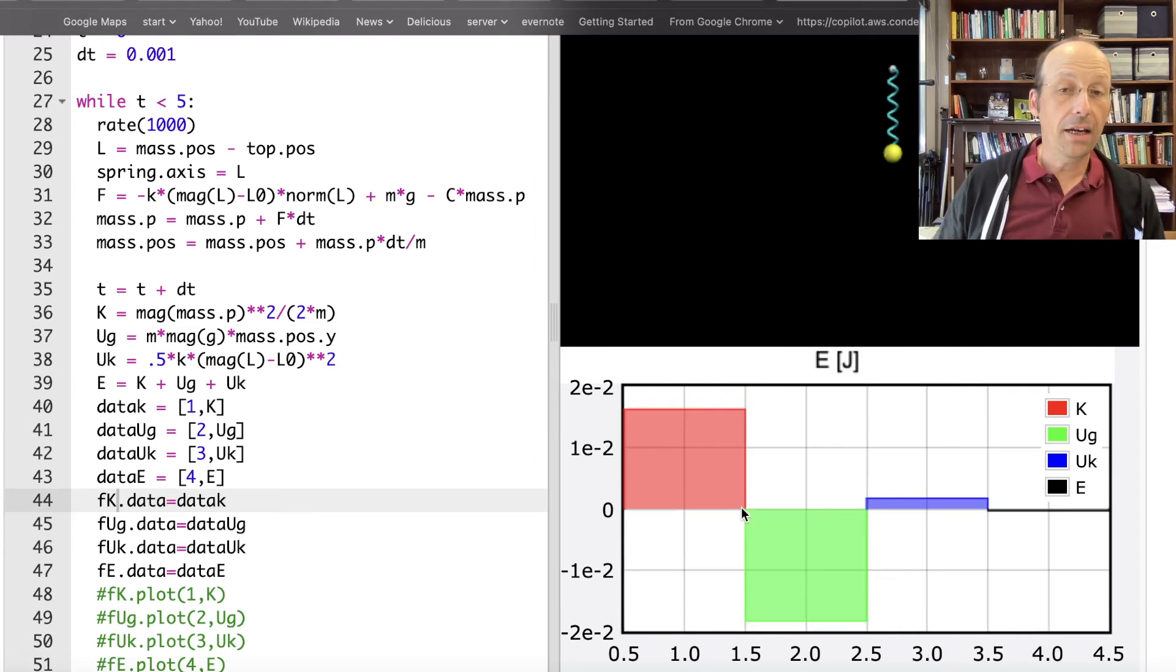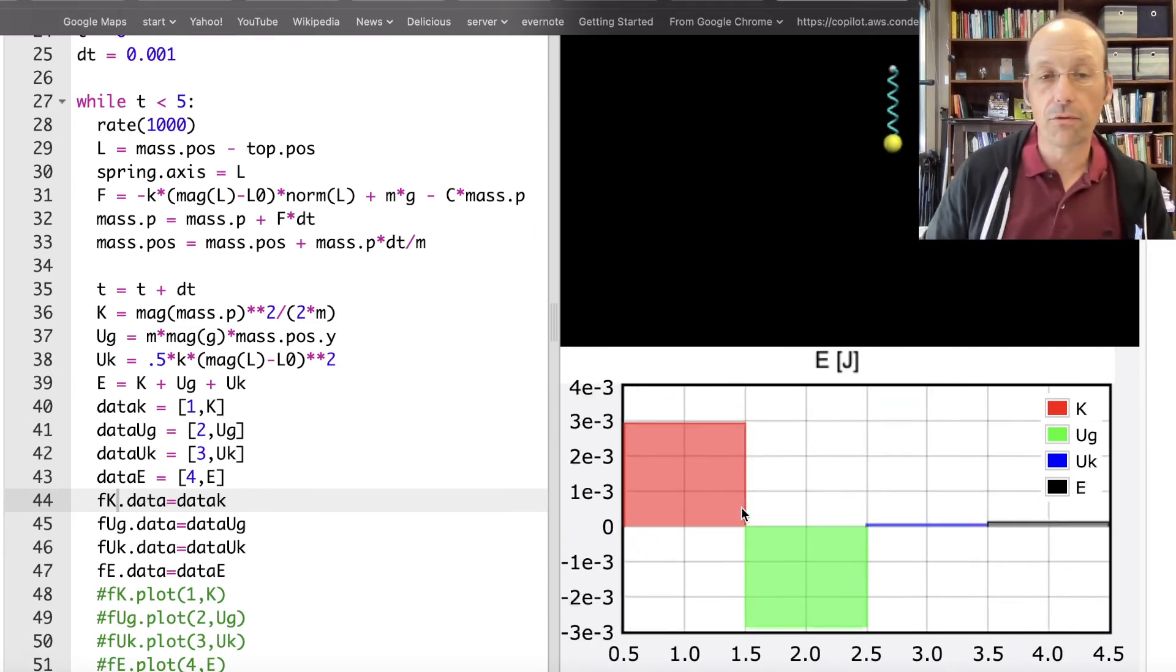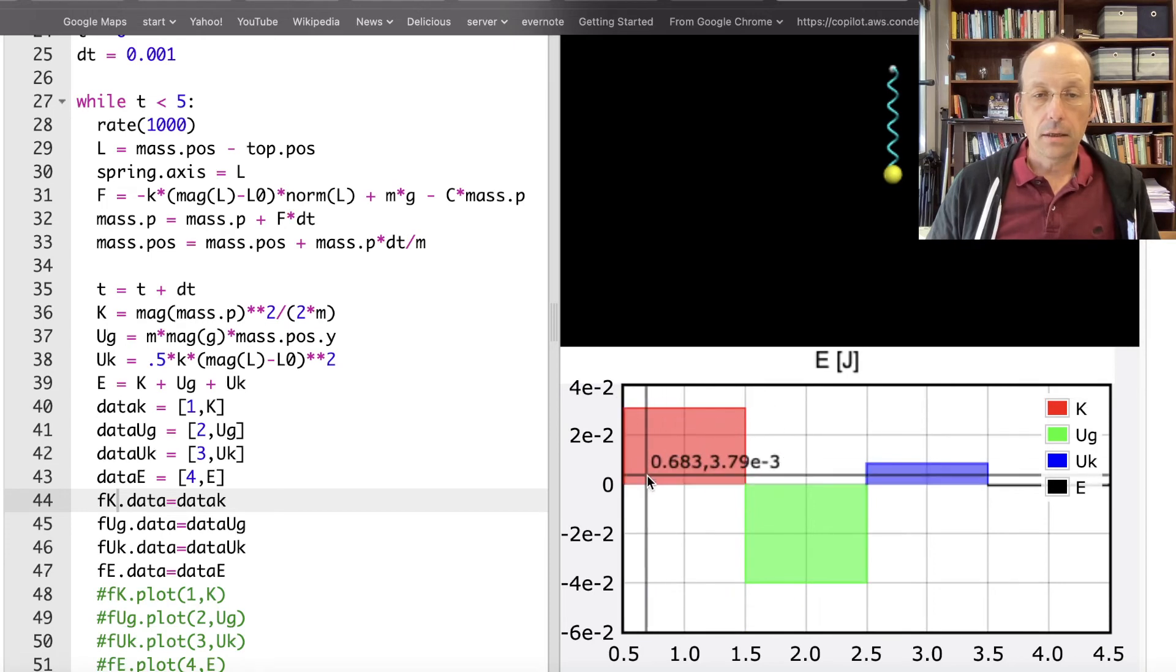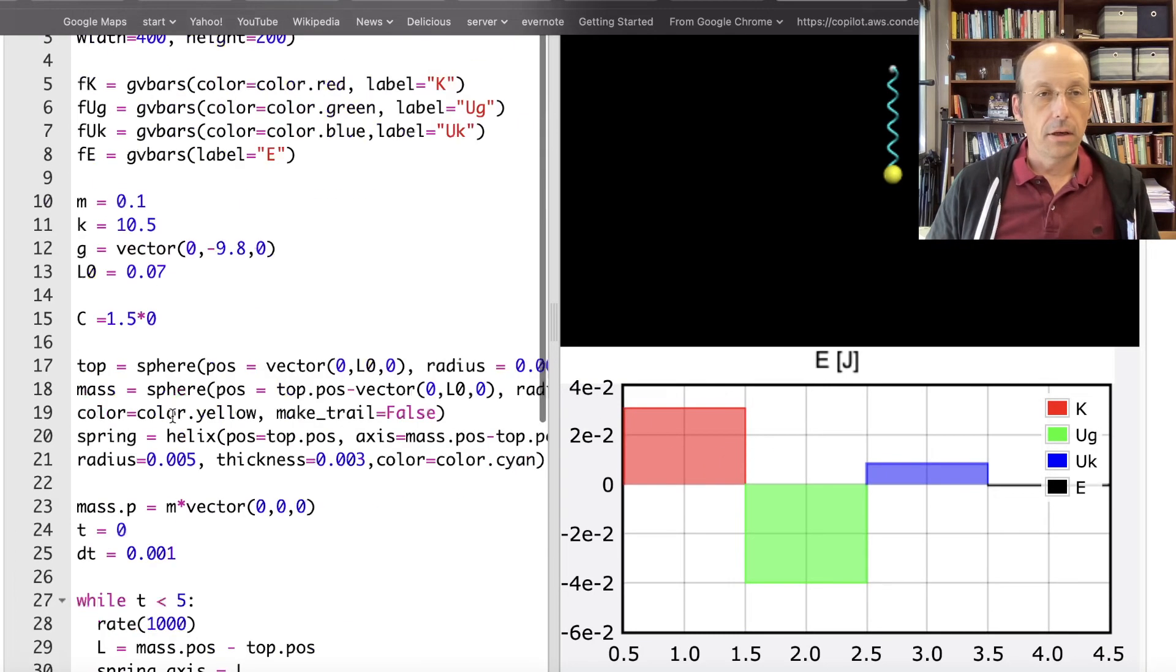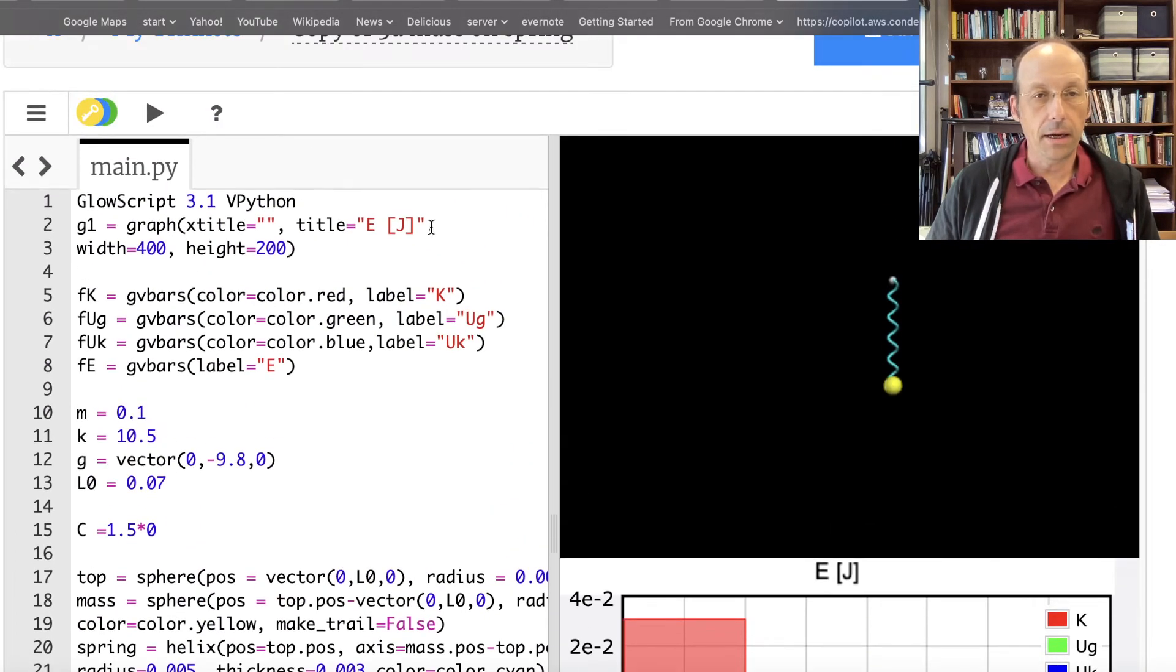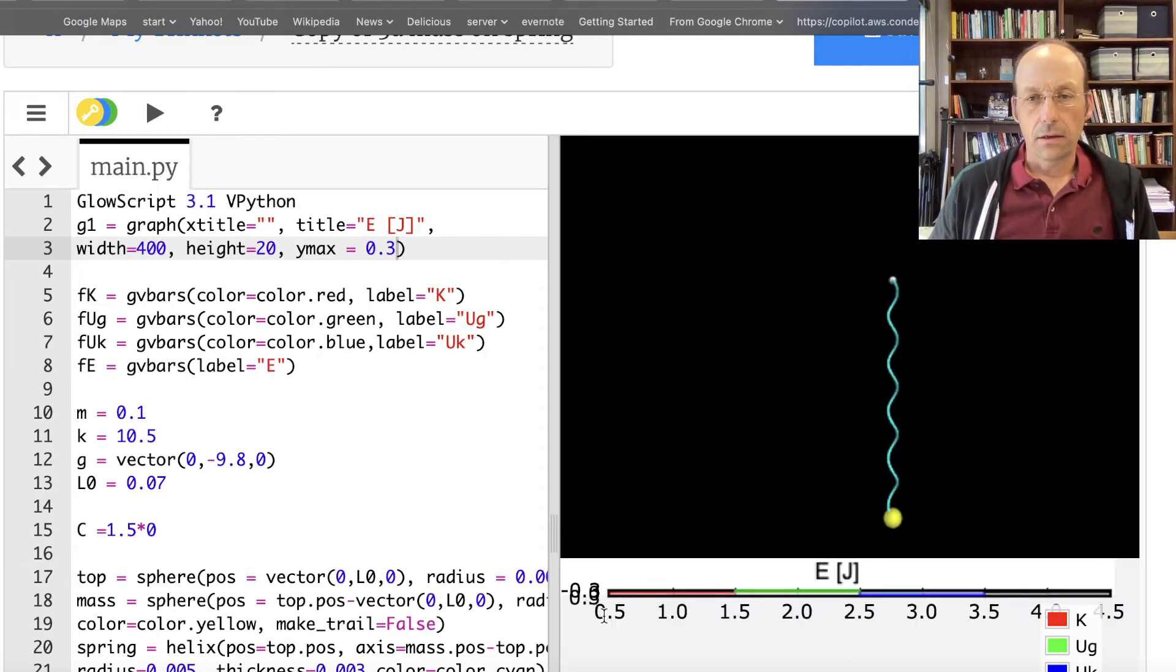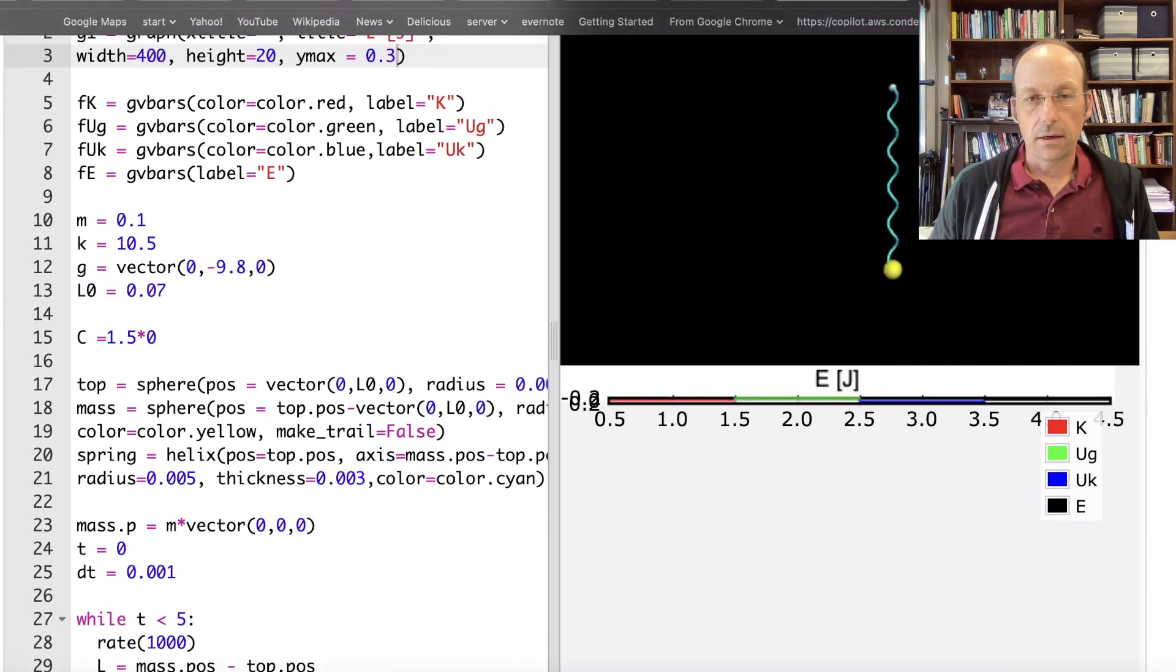okay so it doesn't look great we can fix this in a number of reasons so it's going up to a maximum of let's say point point two or something so up here in my in my I can do this y max equals zero point three let's just see if that works I don't know if that's right yeah that didn't that didn't do it